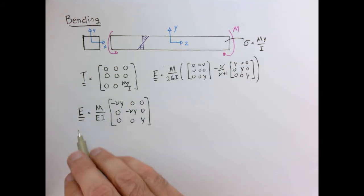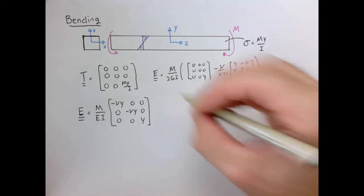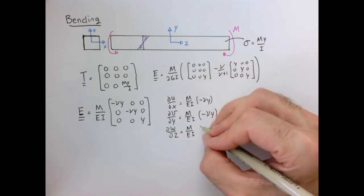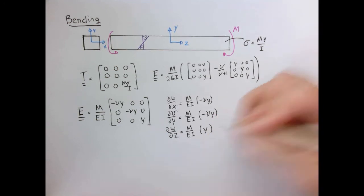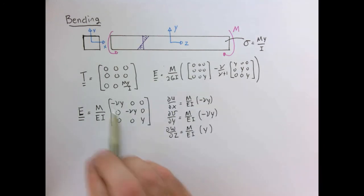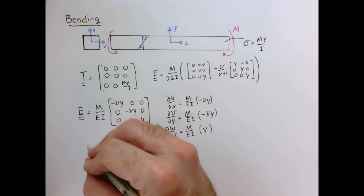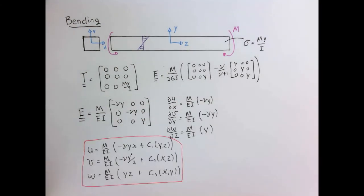Now once we have our strain tensor, just as in our previous examples, we can use the strain tensor to compute the displacement gradients. The displacement gradients have the following form, because we just have the values along the diagonal here, so it's quite simple. Now we can integrate these, but we have to be a little bit careful, because we have constants of integration which could potentially be functions of X, Y, and Z.